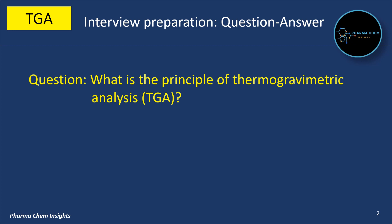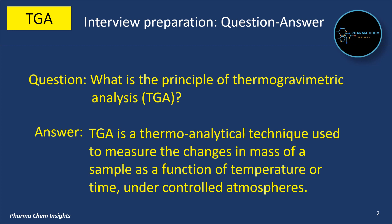First question: What is the principle of thermo-gravimetric analysis TGA? TGA is a thermo-analytic technique used to measure the changes in mass of a sample as a function of temperature or time under controlled atmospheres.